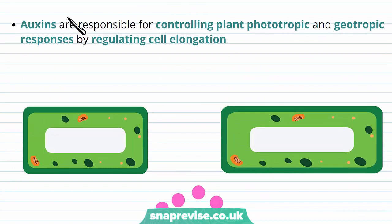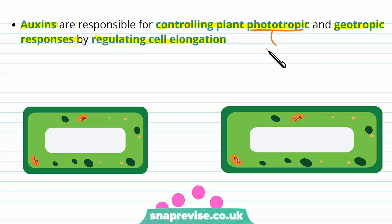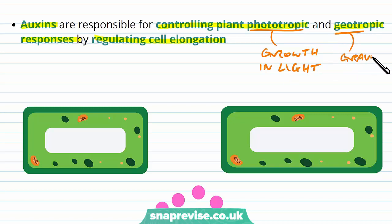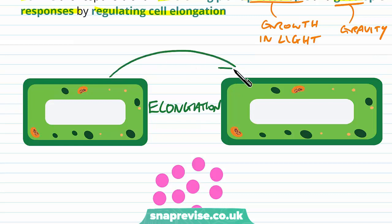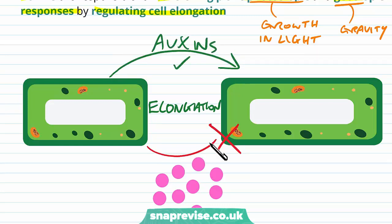The group of growth factors known as auxins are responsible for controlling the plant's phototropic and geotropic responses, and they do this by regulating cell elongation. Phototropism refers to growth in response to light, whereas geotropism means a response to gravity. The auxins don't focus on mitosis so much, but they do focus on cell elongation — sometimes encouraging it, but sometimes inhibiting it as well.